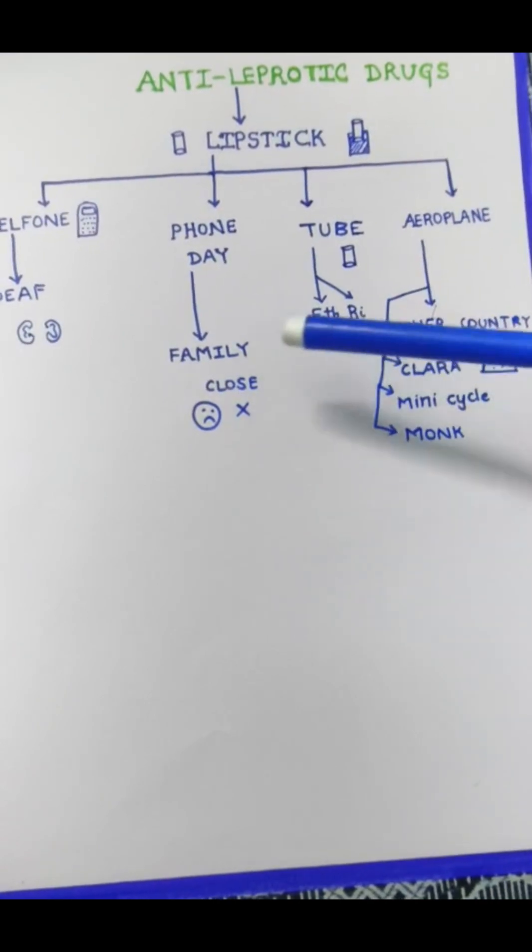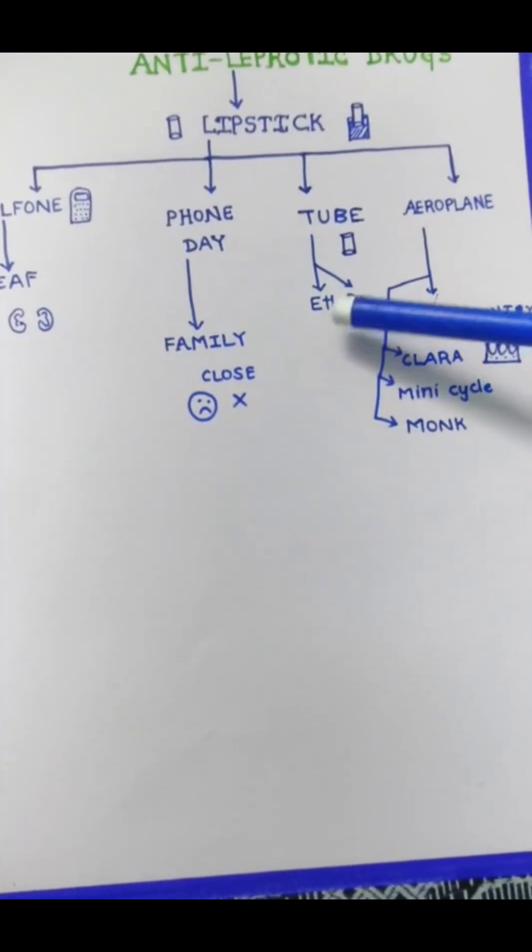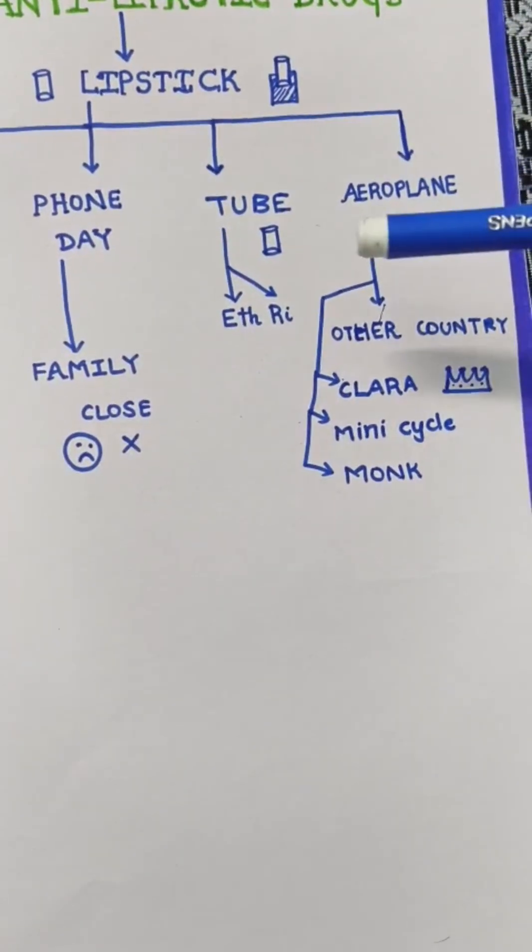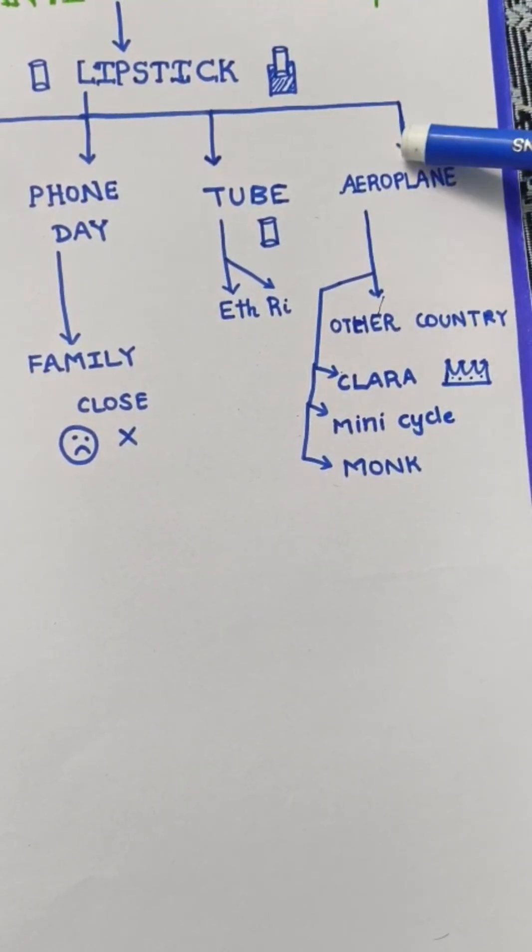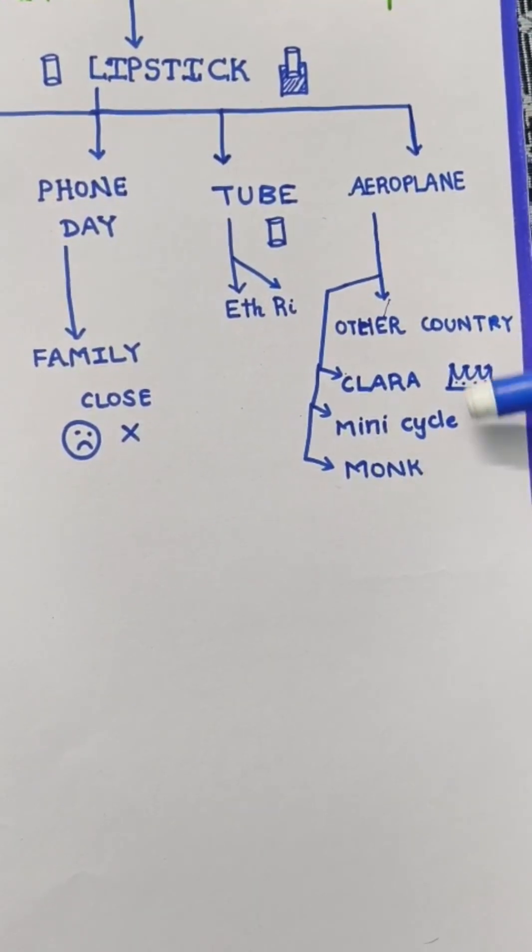So for enemy in Tamil you say ediri, okay? So because of this enmity she flew to another country in an aeroplane. The country was ruled by a Queen Clara.